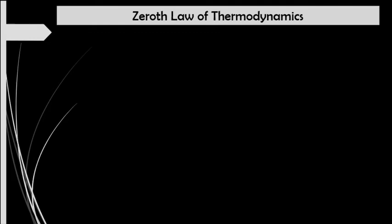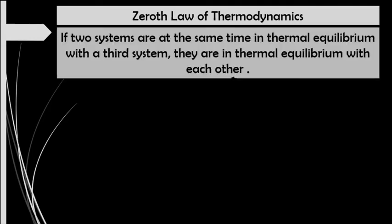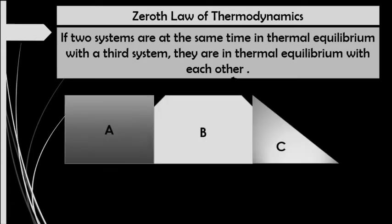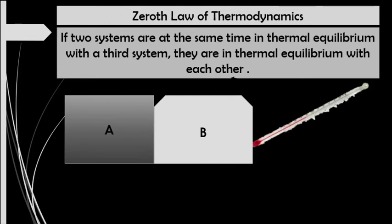The idea of thermal equilibrium is the concept being used in thermometers. Going back to our given scenario, if object C is our thermometer, it means that we have to read the measurement when the objects are in thermal equilibrium. This is also called the zeroth law of thermodynamics, which states that if two systems are at the same time in thermal equilibrium with a third system, they are in thermal equilibrium with each other.